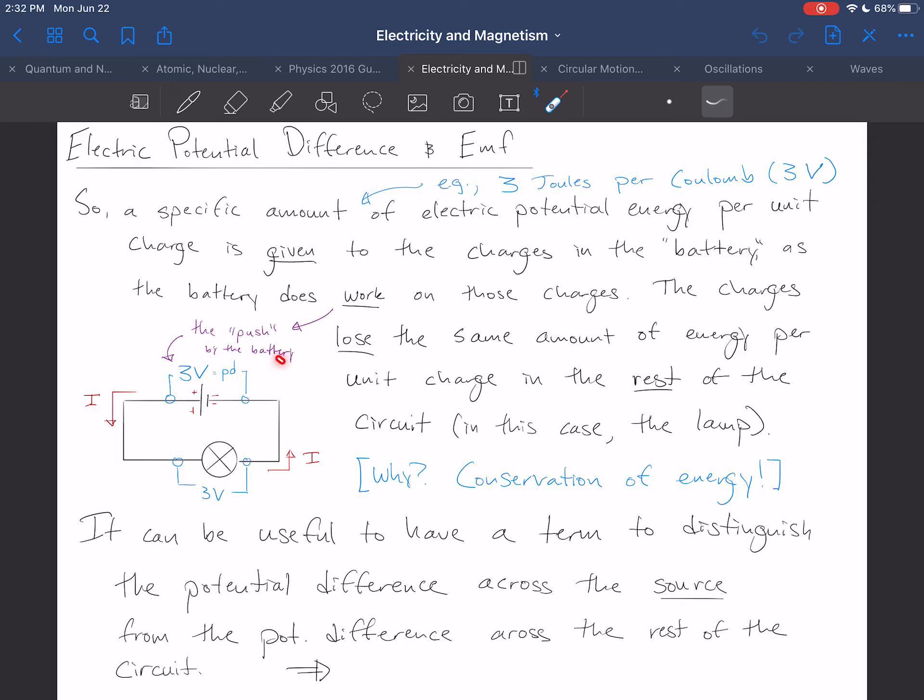Consider our circuit from before, and let's say the battery is rated at 3 volts. We've said that you can sort of consider this as the push by the battery, but we know this to be the potential difference across, and I'm showing that here formally with this notation where you sort of touch across both sides of this, as being 3 volts.